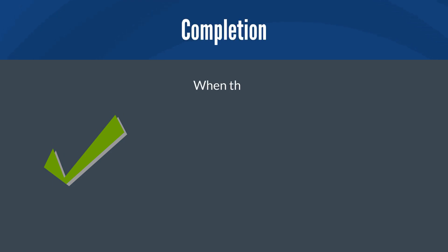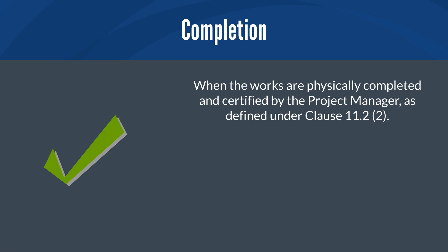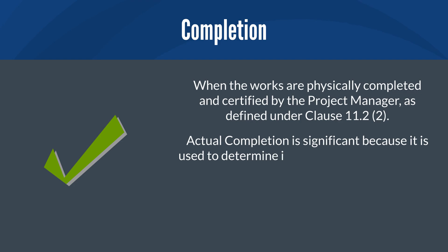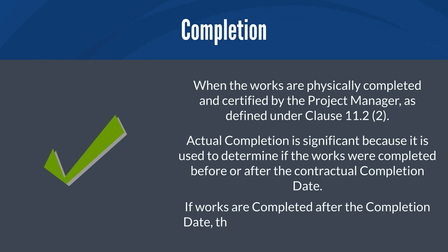Completion is the date when the works are physically completed and certified by the project manager, as defined under Clause 11.2.2. Actual completion is significant because it is used to determine if the works were completed before or after the contractual completion date. If works are completed after the completion date, the contractor could be subject to delay damages.